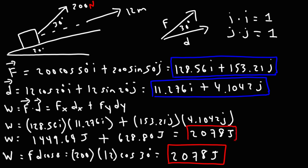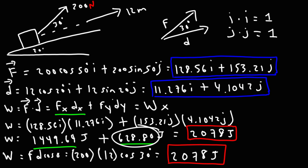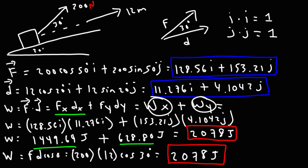The answer is the same. Notice that 1,449 joules represents the work done in the x direction, and 628.80 joules is the work done in the y direction. When you add the work done in the x direction plus the work done in the y direction — since these are scalar quantities, not vectors — you get the total work done by the force acting on this object.